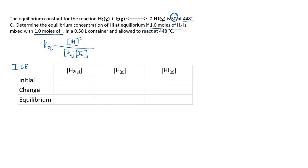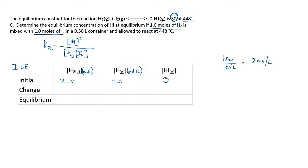Let's start by calculating the initial concentrations. The initial concentration of H₂ gas: we have 1.0 moles in 0.5 liters, giving 2.0 moles per liter. The iodine gas is the same — also 2.0 moles per liter. For hydrogen iodide, we start with none of that; we put our reactants in and have no product to start with.